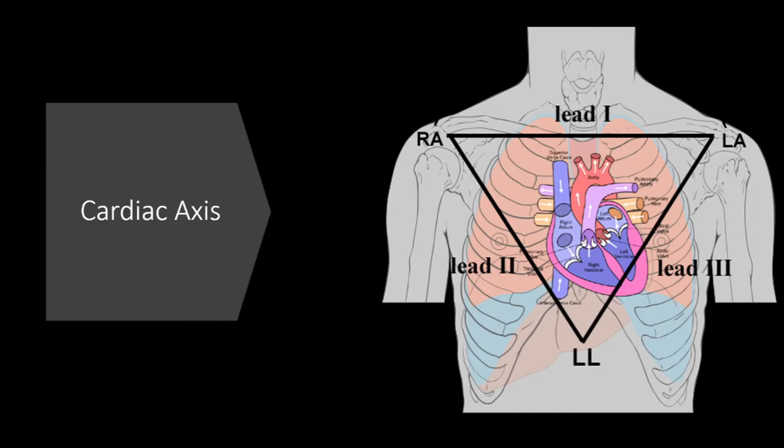Now that we fully understand vectors and electrodes and what they look at, we need to determine the overall axis of depolarization, which is our cardiac axis. I won't lie, this topic is a bit difficult, but I have some tips. You must remember that if an impulse heads towards a lead, there will be a positive deflection. If it travels away from it, it will cause a negative deflection. You also have to remember the normal conduction pathway through the heart as well, because that's going to be very important.